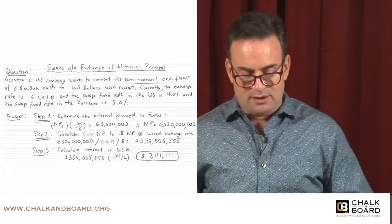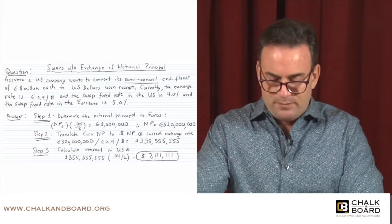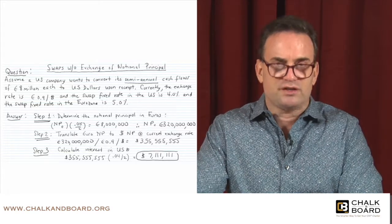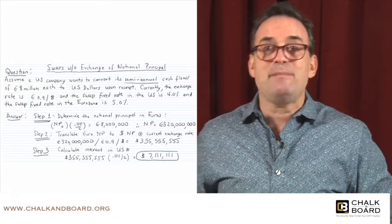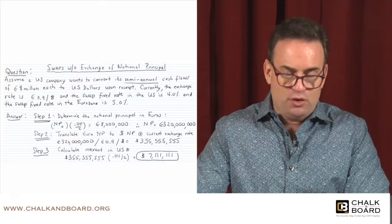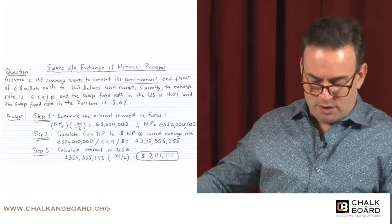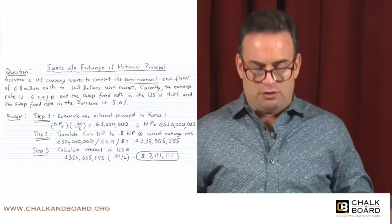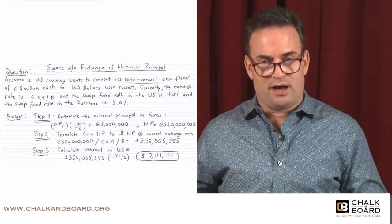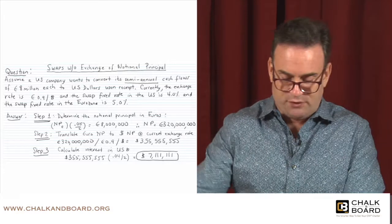Let's say I have a US firm, and this US firm wishes to convert their semi-annual — and that's the key word — semi-annual cash flows of 8 million euros each to dollars upon receipt. So they're getting 8 million euros every six months, and they want to immediately convert that to dollars upon receipt because it's a US firm.